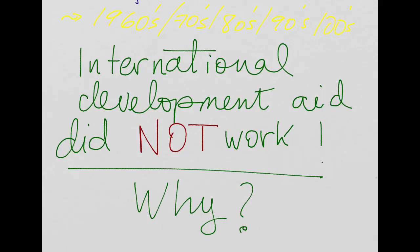But looking back at this period — from the 60s until nowadays — the empirical evidence tells us that international development aid did not work. It was not able to promote economic growth in developing countries, and there is even evidence that there might be a negative effect on growth because of aid. So the question we want to answer is: why did aid not work?